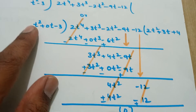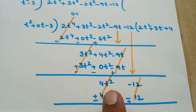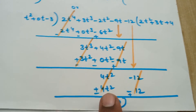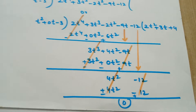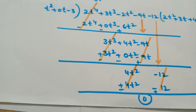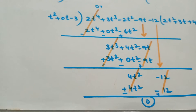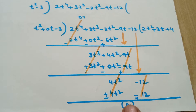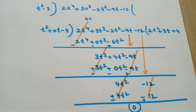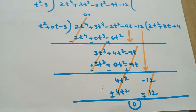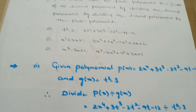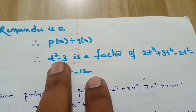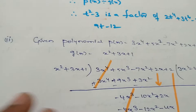For t², what we should multiply to become 4t²? We multiply by 4. So 4 × t² = 4t², 4 × 0t = 0, and 4 × (-3) = -12. Now all terms cancel, therefore the remainder is 0. When the remainder is zero, g(t) is a factor of p(t). Therefore t² - 3 is a factor of the given polynomial.